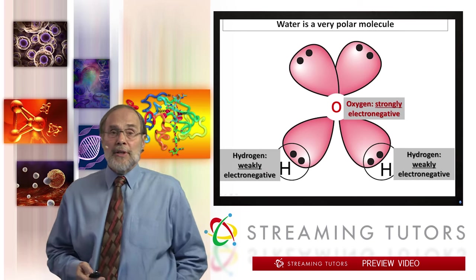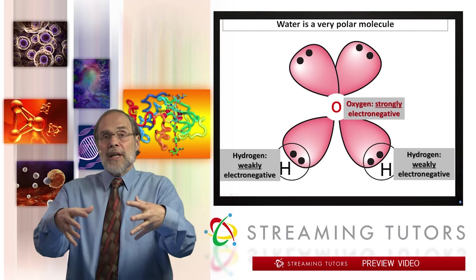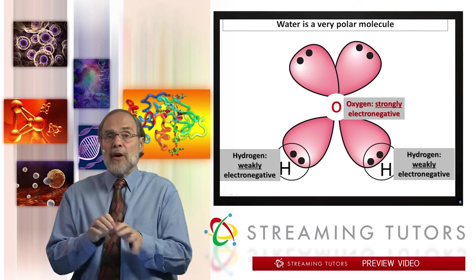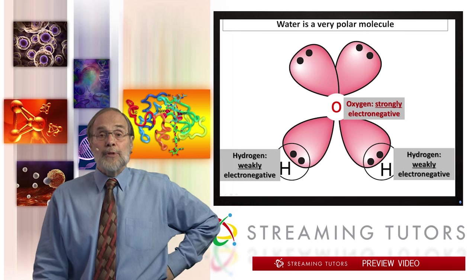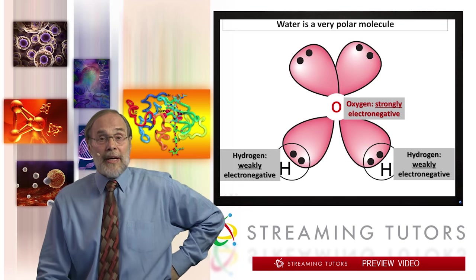So oxygen is strongly electronegative. What that means is that it tends to attract electrons to itself and away from the less electronegative atoms to which it is bound, of which hydrogen is a dramatic and specific example.